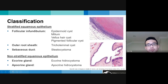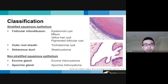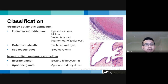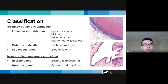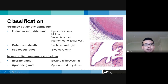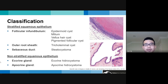A more useful diagnostic approach also considers the histopathological characteristics of each cyst. Those derived from the follicular units have a stratified squamous epithelium, whereas those derived from the sweat glands have non-stratified squamous epithelium.